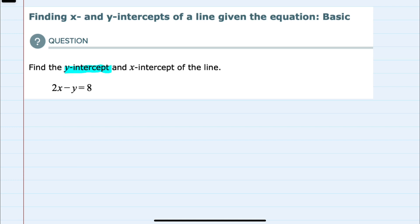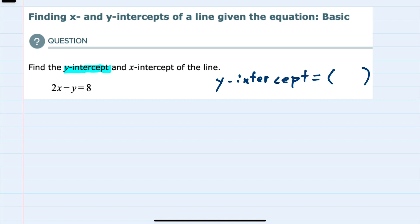So I'll start with the y-intercept and we know that where a line crosses the y-axis, whatever point that is, the x value will be zero. So to find the y-intercept we can let the x equal 0.